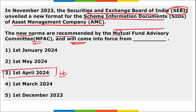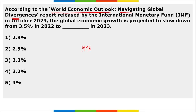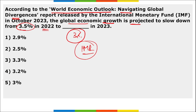According to the World Economic Outlook: Navigating Global Divergences report released by IMF, the global economy's growth is projected to slow to 3% in 2023, down from 3.5% projected earlier.